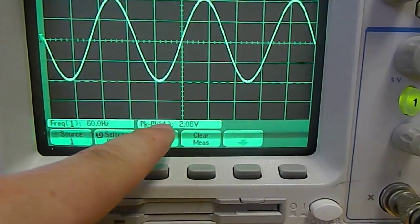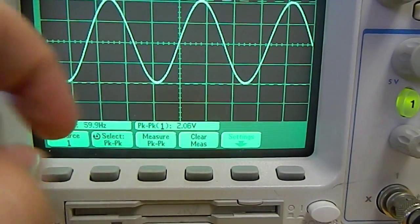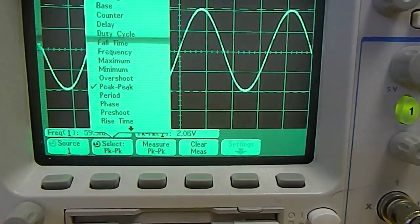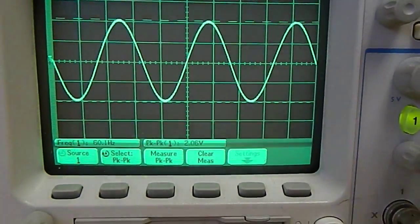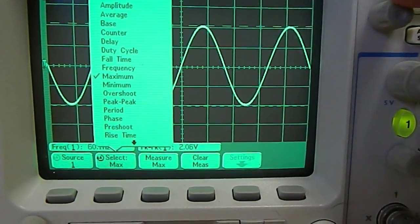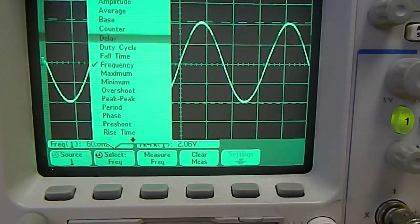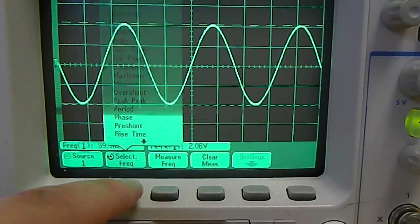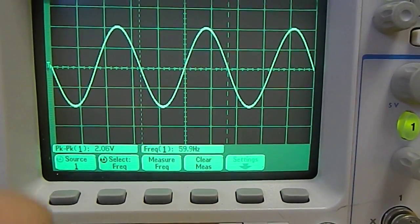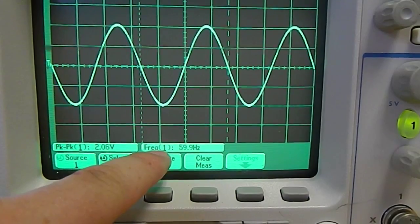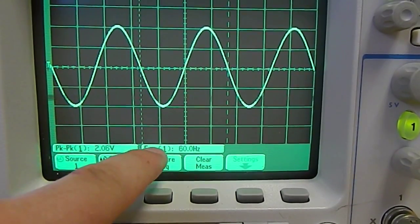The measurement immediately pops up. If I want to add another measurement, I can again click on select and go to, for example, frequency. Then click on measure frequency. It adds another measurement, so now I'm measuring both peak to peak and frequency.